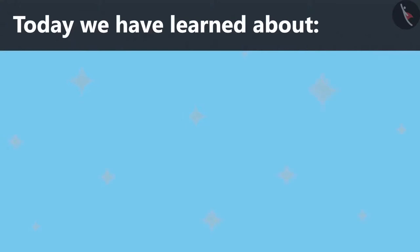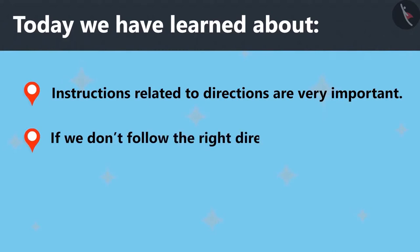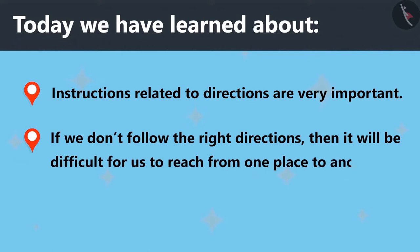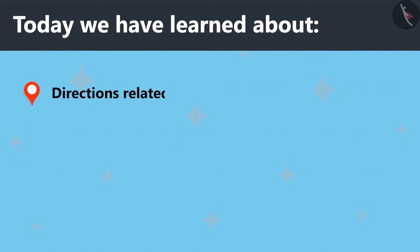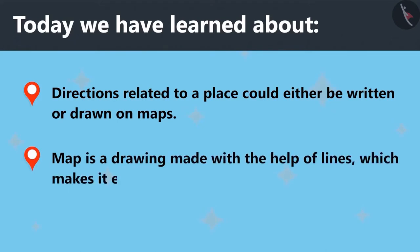Today we have learned that instructions related to directions are very important. If we don't follow the right directions, then it will be difficult for us to reach from one place to another. Directions related to a place could either be written or drawn on maps. A map is a drawing made with the help of lines which makes it easy to reach different places.